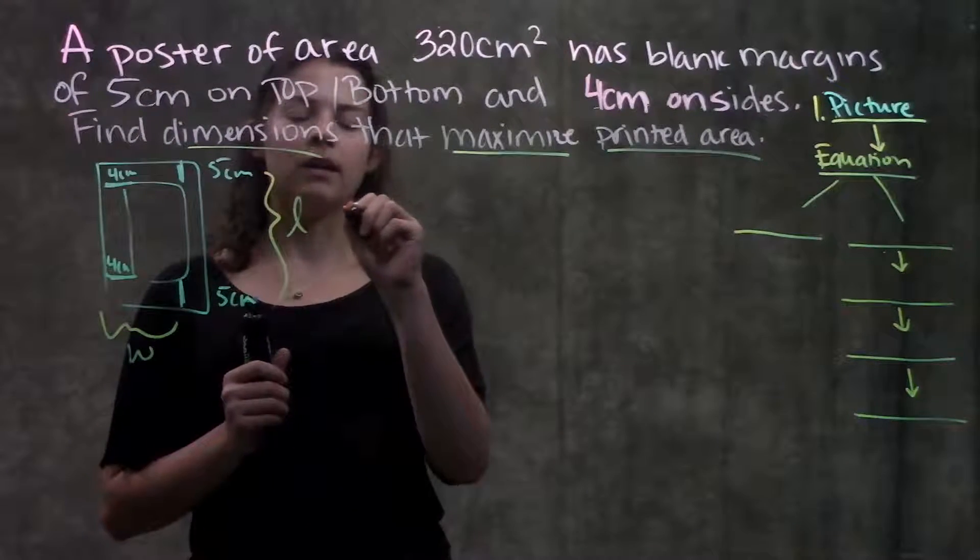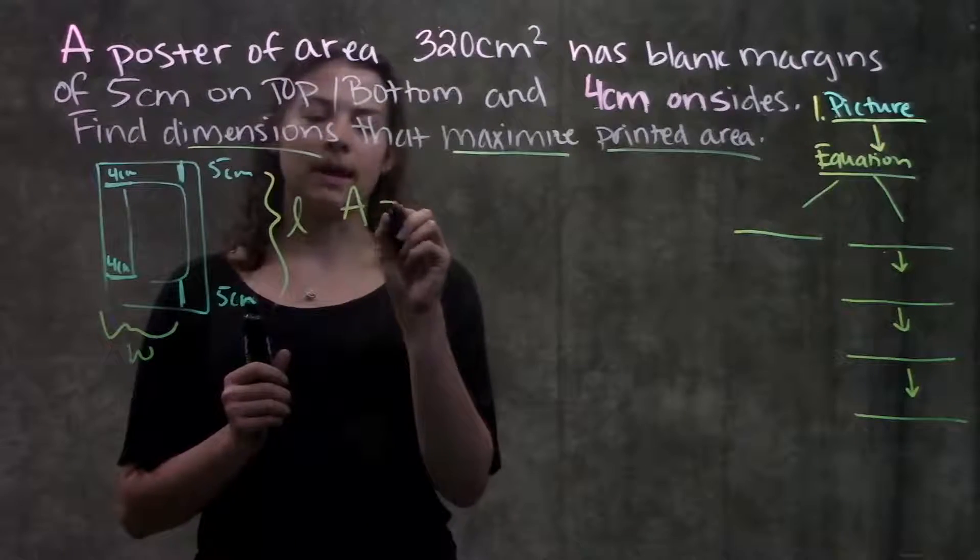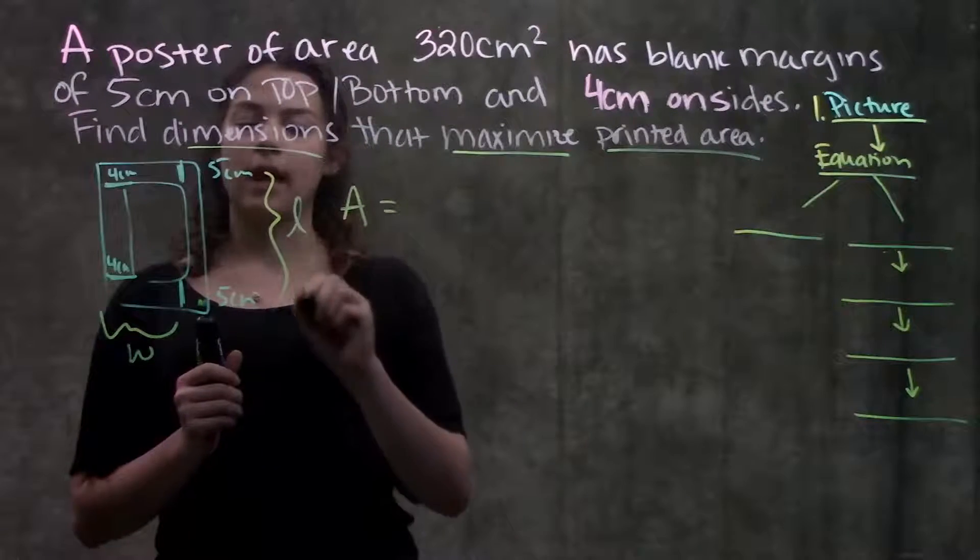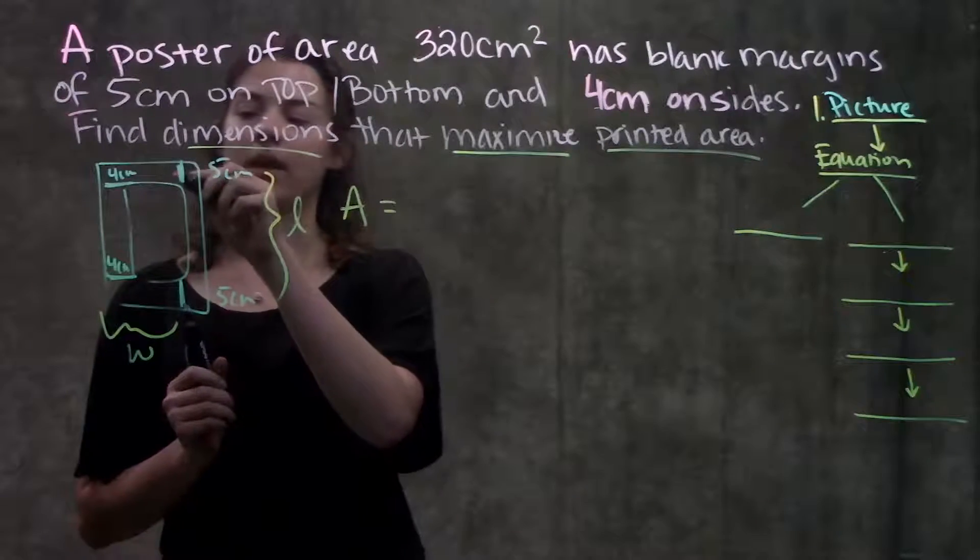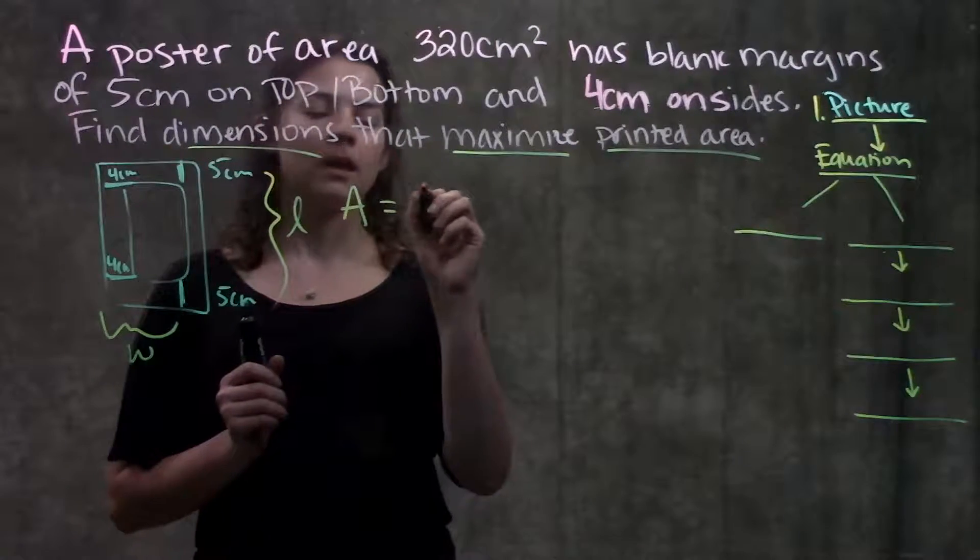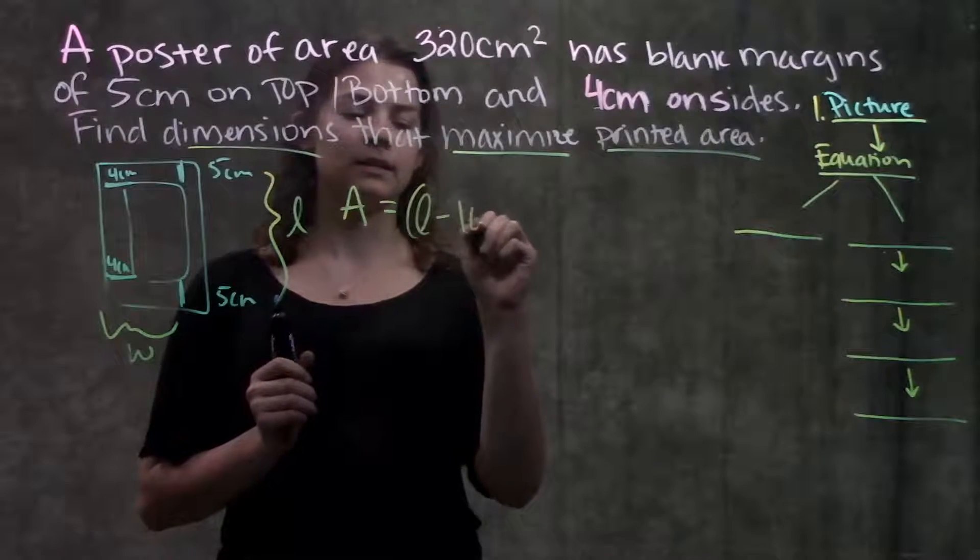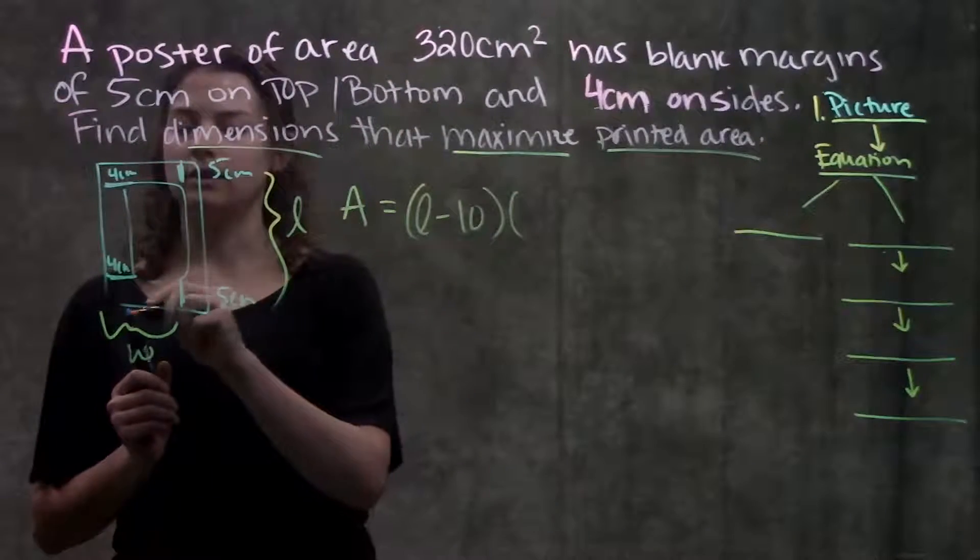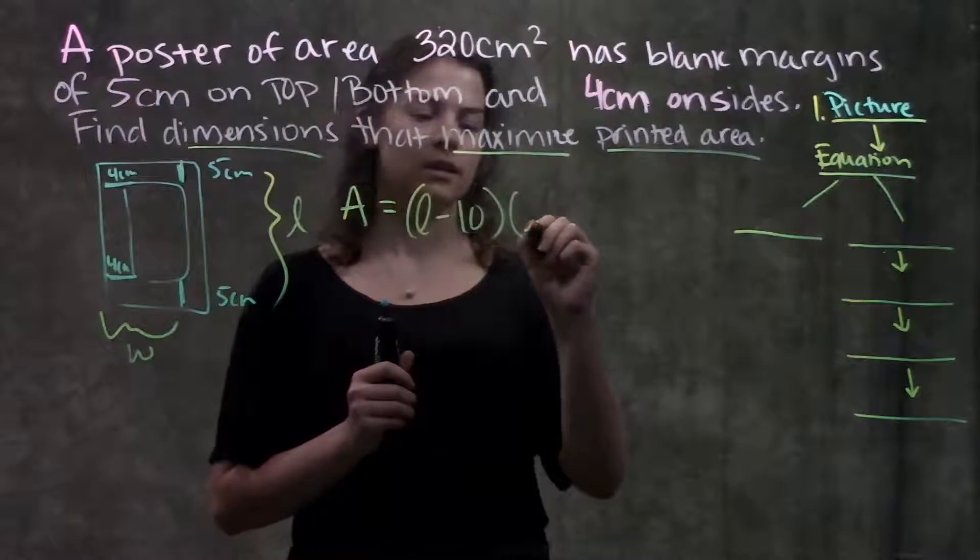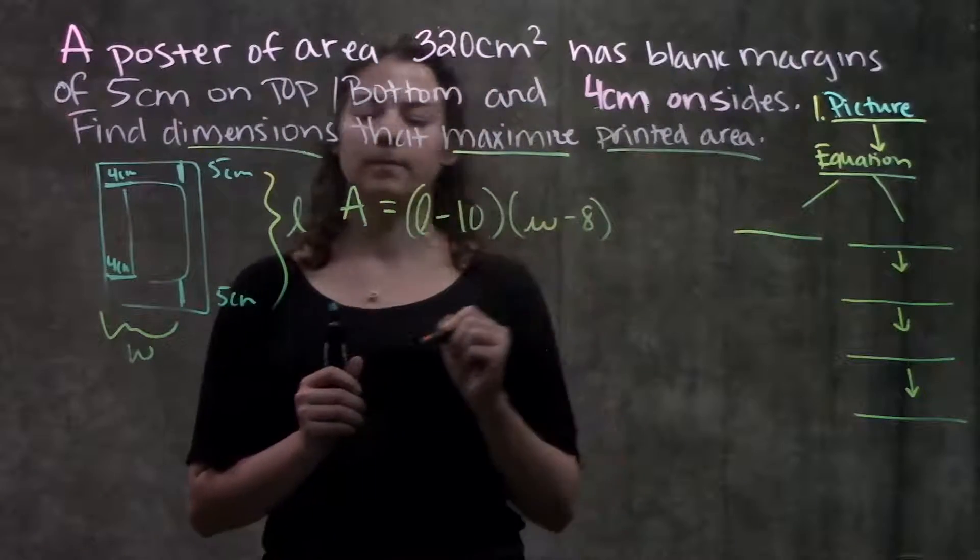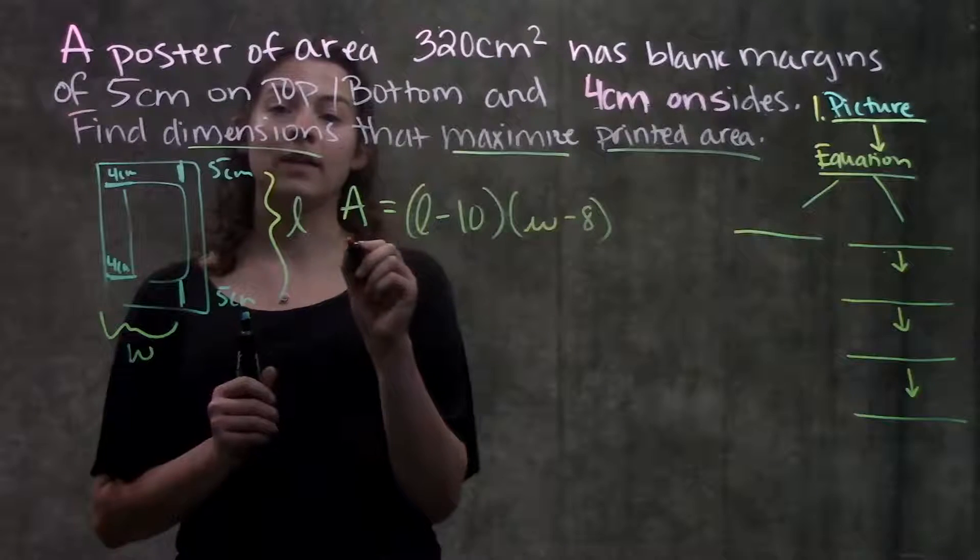And we'll say that the area that we want to optimize is equal to L minus 10 because it's minus the blank margins, right? So L minus 10 times W minus 8. Because remember, there's margins on both sides. So W minus 8. Okay, so here's our area that we want to optimize.